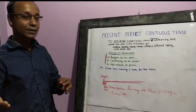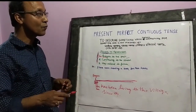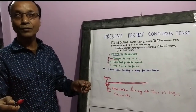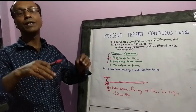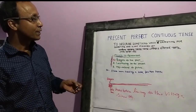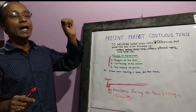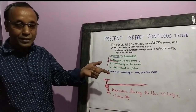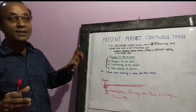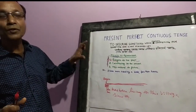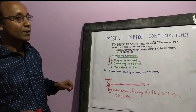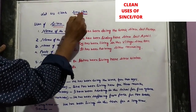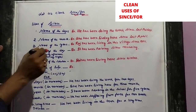For example: 'I have been reading a book for two hours.' This is an action that started in the past, it is now continuing, and may extend into the future. This is the main point you have to remember.